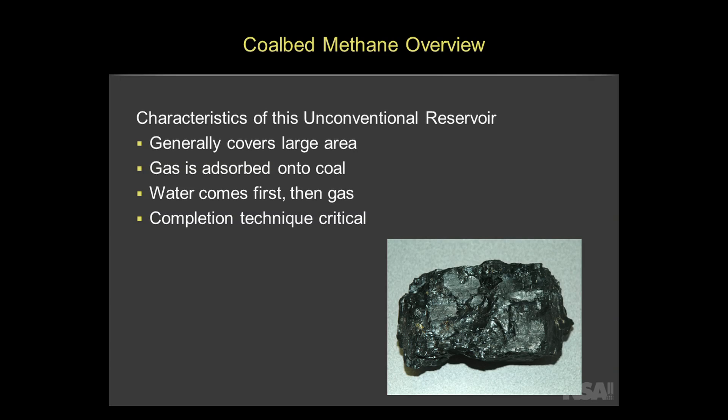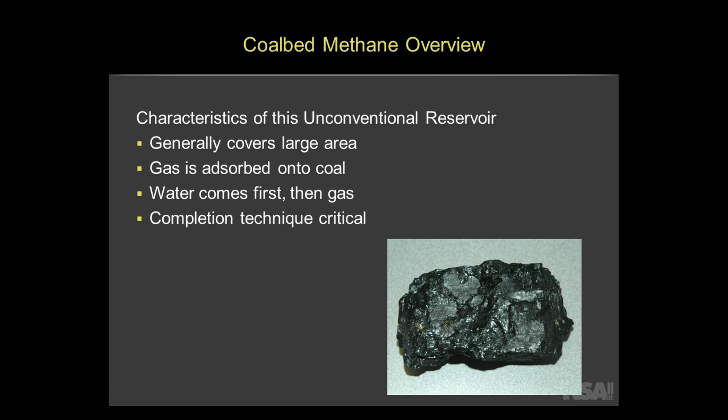Just as an overview, what's shown on this slide on the bottom right is a particular example of coal. Coal can be black, it can be brown, it can be fractured, it can have impurities. There are lots of different types of coals around the world, and part of it is dictated by the depth that the coal is buried. All of the coals we look at cover a very large area, just like the unconventional oil and gas we've talked about. One unique thing is the gas is not initially free to move like it is in conventional reservoirs, and even in unconventional tight reservoirs and oil reservoirs.